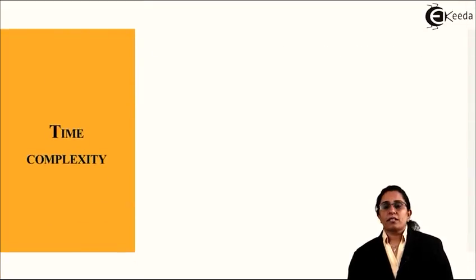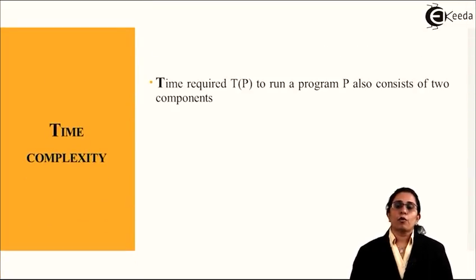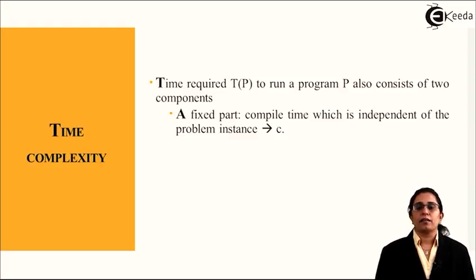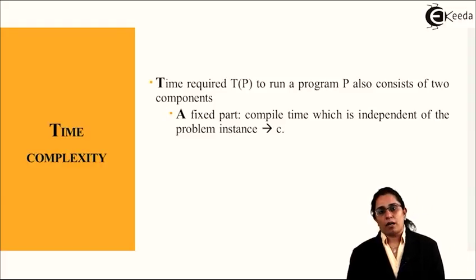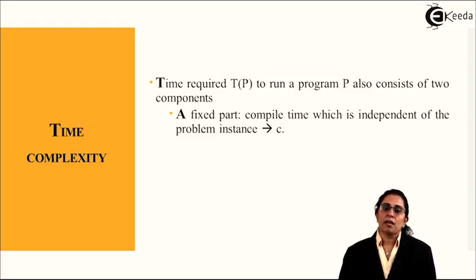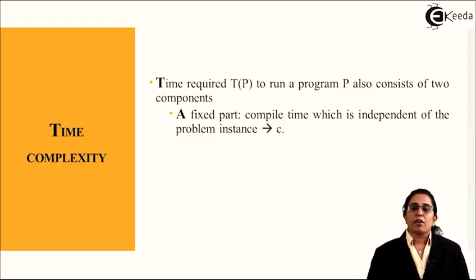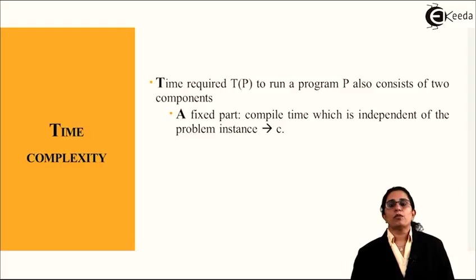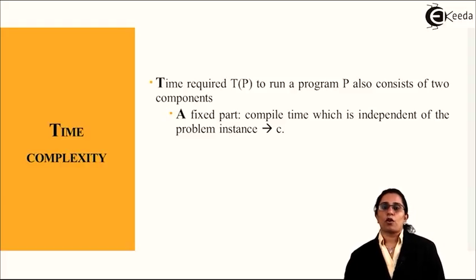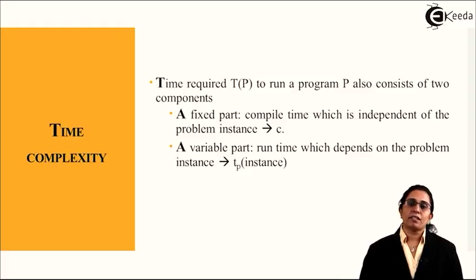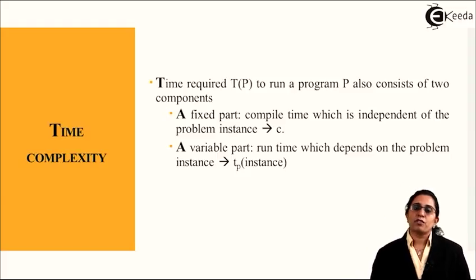Time required T(P) to run a program P consists of two components. The first one is the fixed part - compile time which is independent of the problem instance, that is constant. The second one is the variable part - the run time which depends on the problem instance.